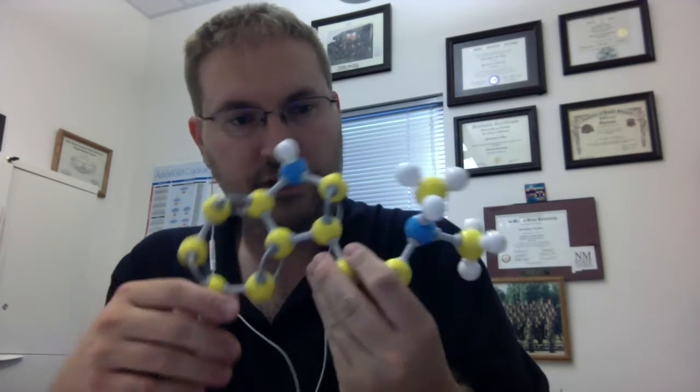Bufotenine has weaker hallucinogenic or psychedelic properties than dimethyltryptamine proper, but it still does have some hallucinogenic properties. Three places you can get this molecule from: it can come from toads, trees, and fishes.